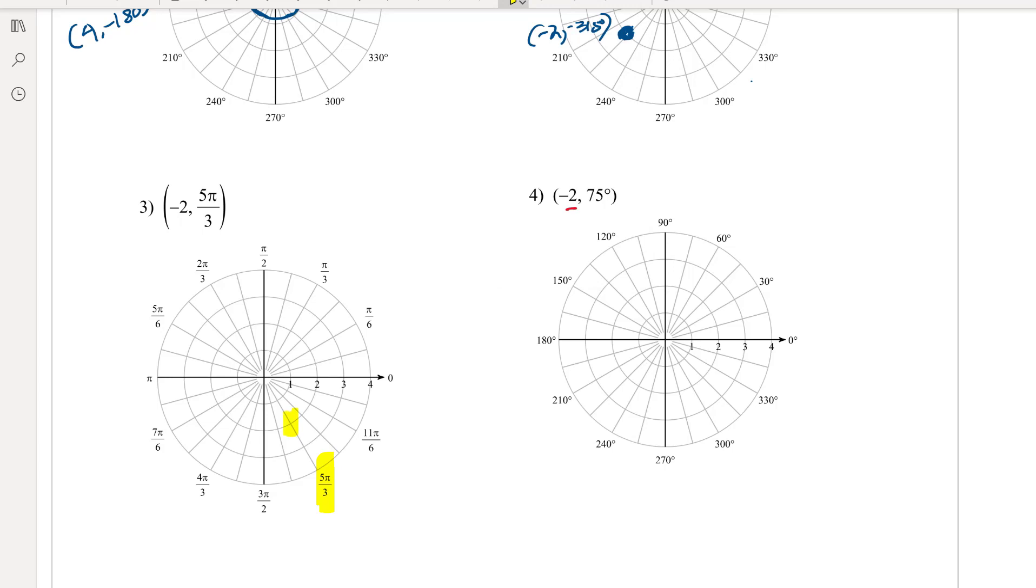But the problem is we have a negative radius. So we're going to take this angle and follow it through. I'm going to locate -2 and follow that around the circle. And that point right there is (-2, 5π/3).